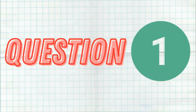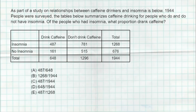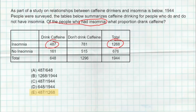Here is question one. You can pause the video, read it, try it on your own, and then hit play to see the answers. The correct answer is E. This is a conditional question because they're asking about the people who have insomnia — that's 1,268 people. Of those people who have insomnia, what proportion drank caffeine? That would be 487 out of 1,268. It's a conditional probability question, pretty easy to answer as long as you know how to read the table correctly.